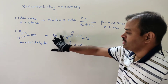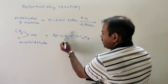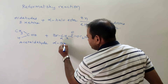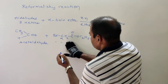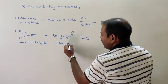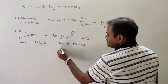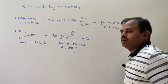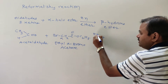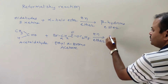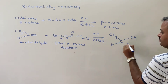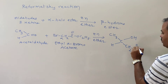In the ester, one hydrogen on the alpha carbon adjacent to the carbonyl group (C=O) is replaced with bromine — that is why it is called alpha-bromo. So this compound is ethyl alpha-bromoacetate. Acetaldehyde reacts with ethyl alpha-bromoacetate in the presence of zinc and ether to give CH₃CHOHCH₂COOC₂H₅.